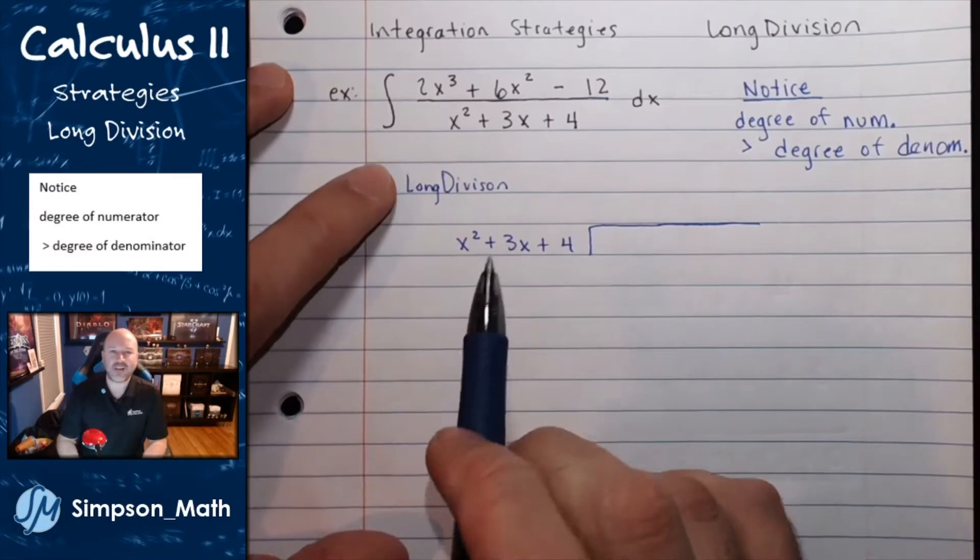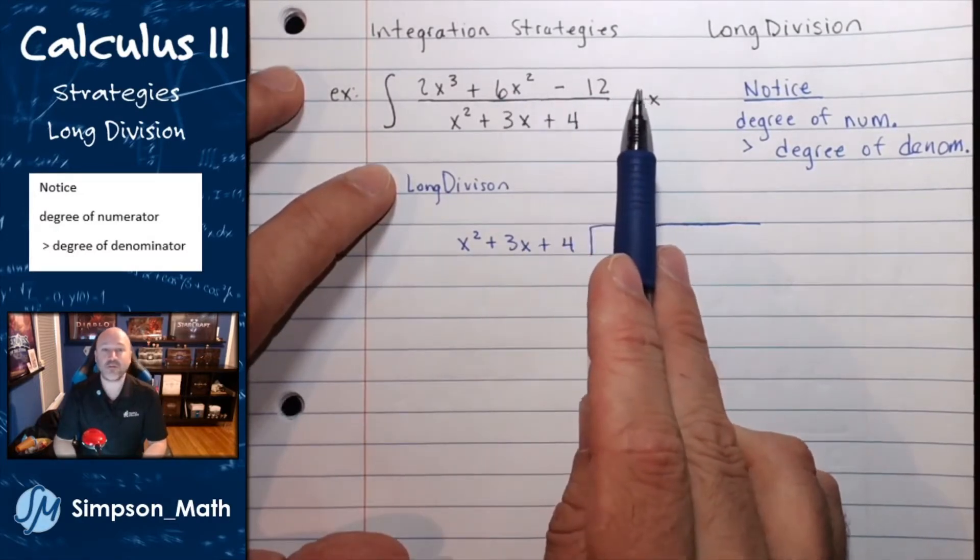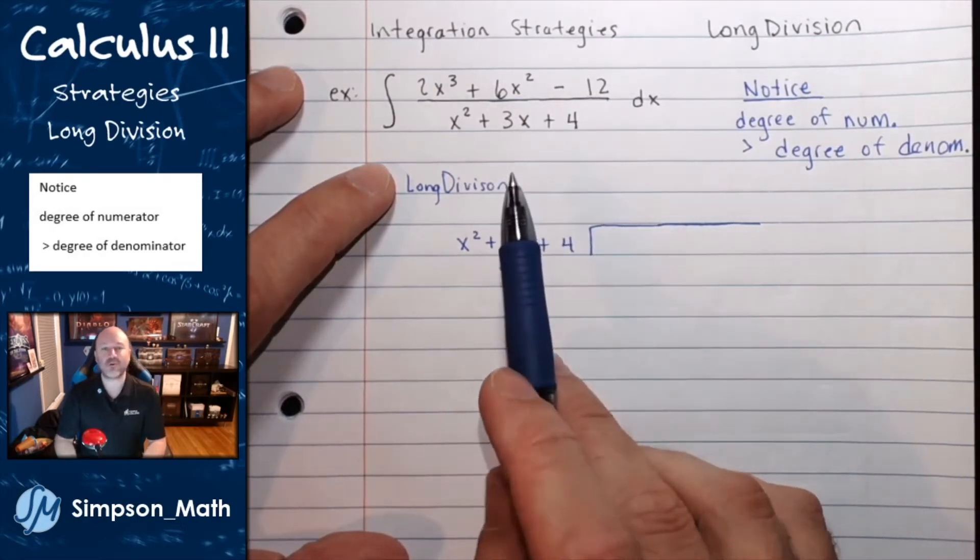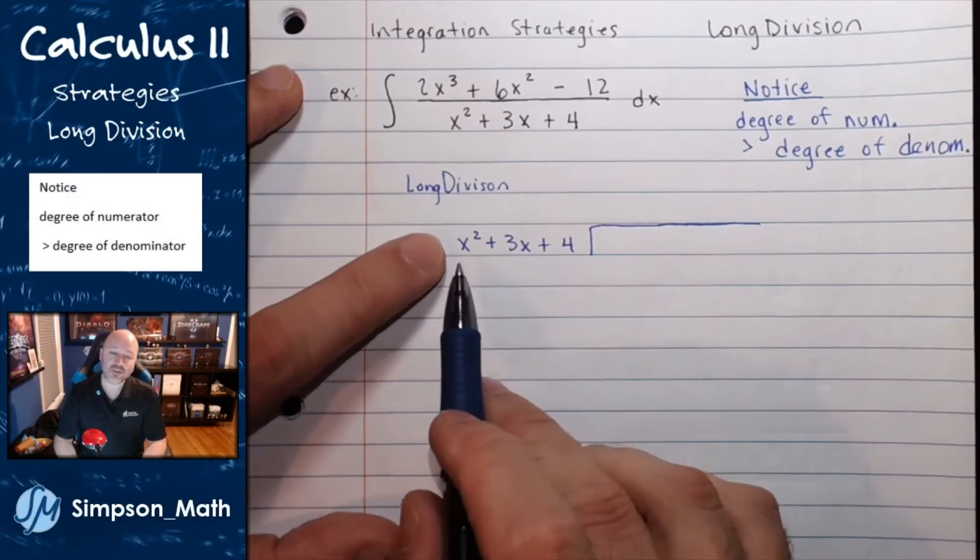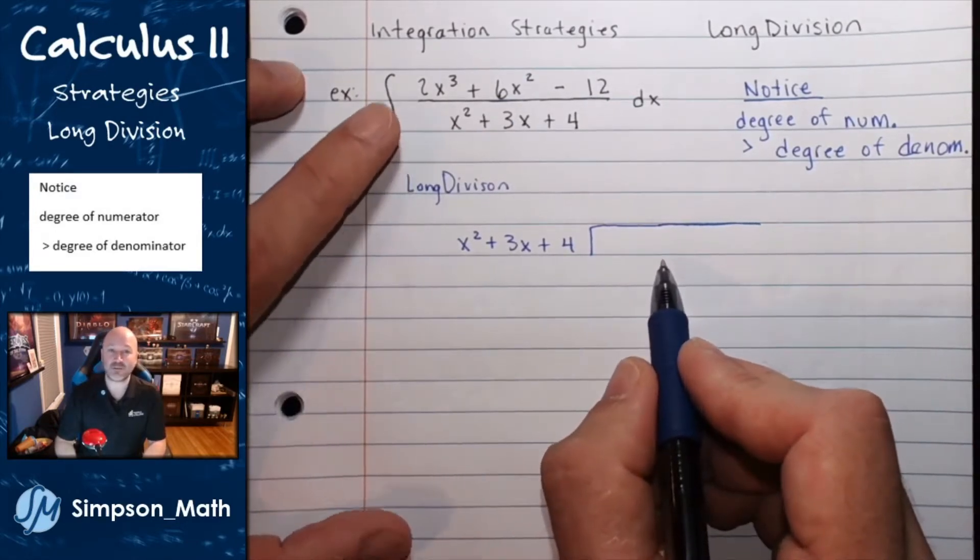Just a reminder of how long division works. Notice, the dividend, what's in the numerator, is being divided by the divisor, and we're looking for the quotient. You write the divisor outside a little box, and then inside, you put the dividend, what's in the numerator.